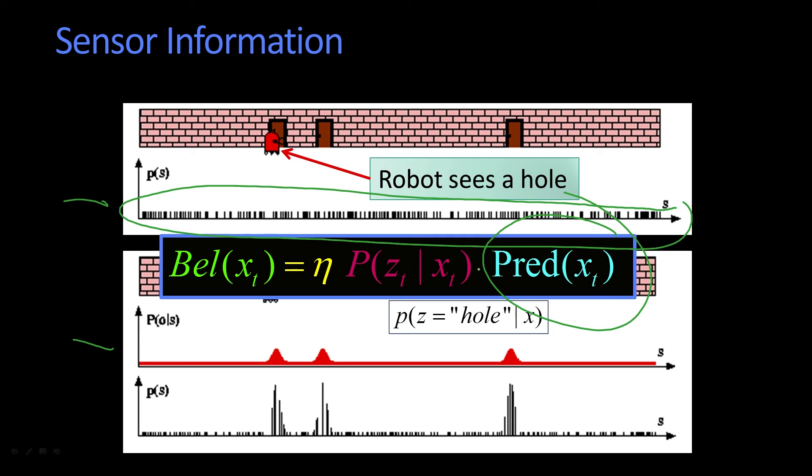times my likelihood, that's this value here. And then I have to normalize the whole thing in order to get a new belief. That's why I'm doing it.